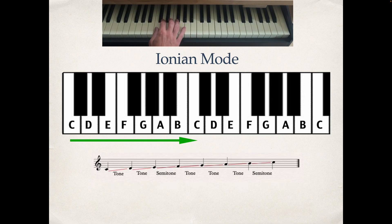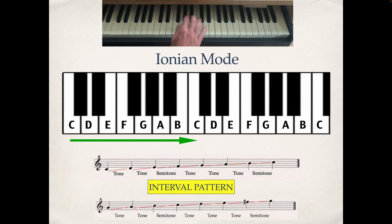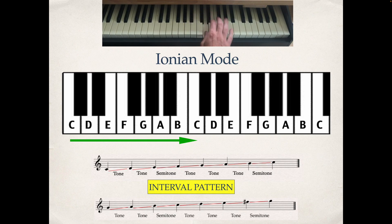The Ionian mode has a distinctive series of intervals: tone, tone, semitone, tone, tone, tone, semitone. Because of this key series of intervals, you can actually play it starting on any note — we could play it starting on G, or starting on A — and you get the same scale, the same mode. That is the Ionian mode, which is what we know as the major scale.